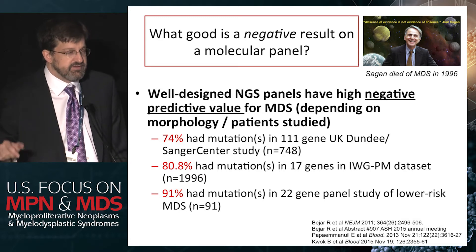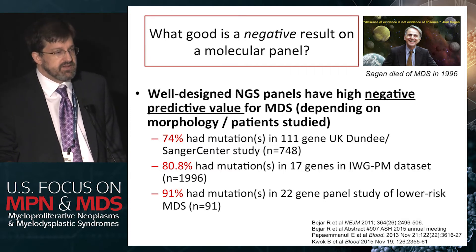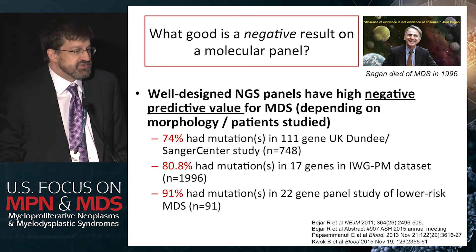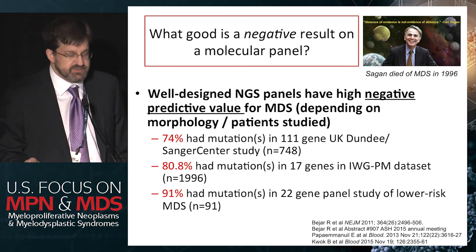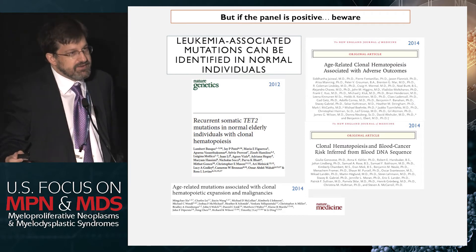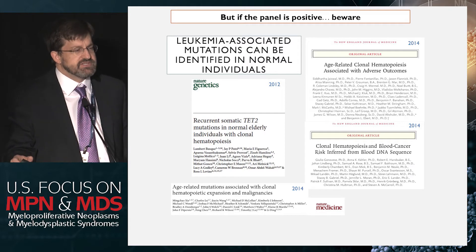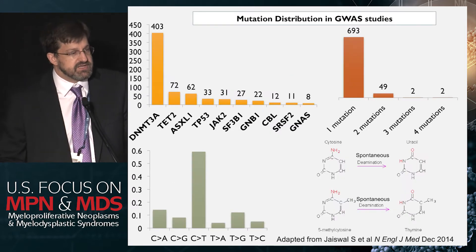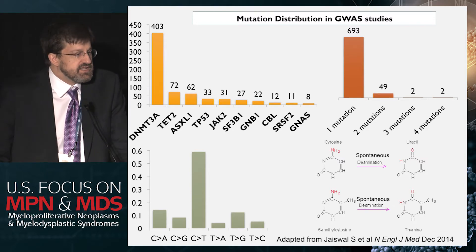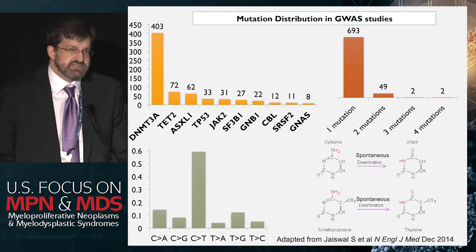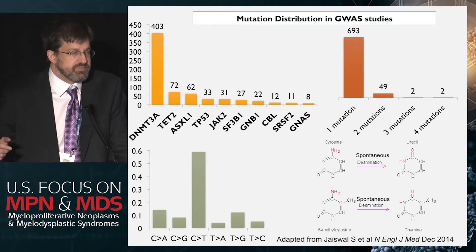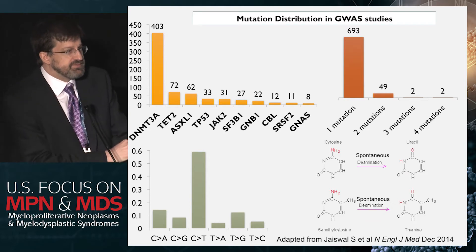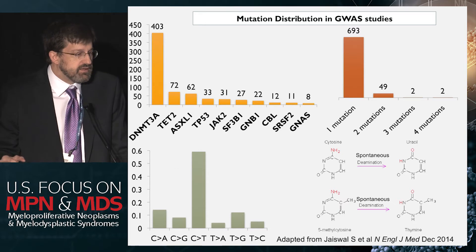Carl Sagan, the great scientist who died of MDS about 20-some years ago, said evidence of absence is not absence of evidence. So a negative panel doesn't exclude MDS, but it does make it less likely. If the panel is positive, however, the situation is a little murkier. We've known for a few years that leukemia-associated mutations can be identified in healthy older people. The majority of these are single mutations, mostly DNMT3A or TET2 changes, and usually C-to-T transversions, which suggests they arise by spontaneous deamination and incorrect repair by the cellular machinery. This is a molecular hallmark of aging.